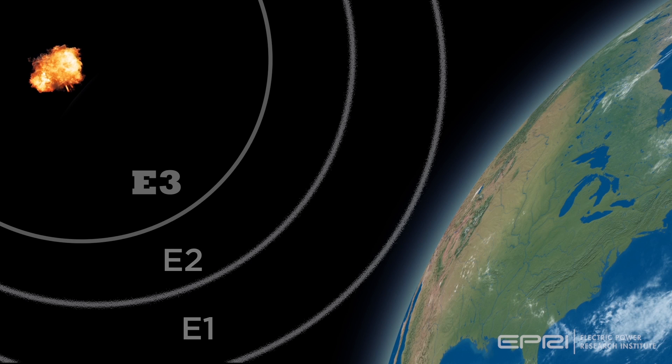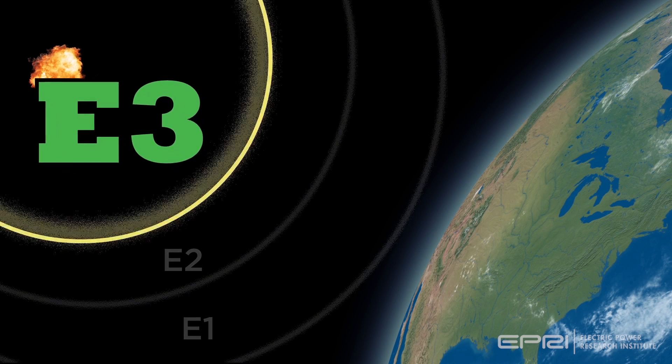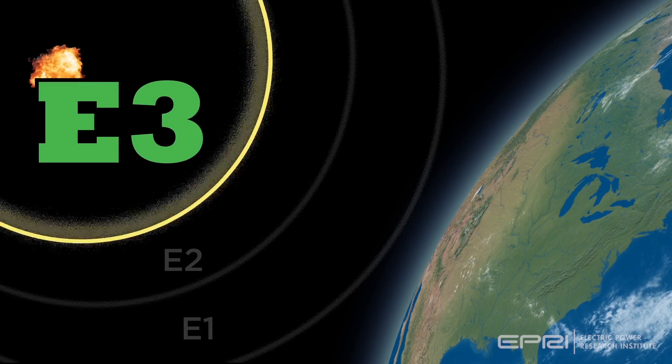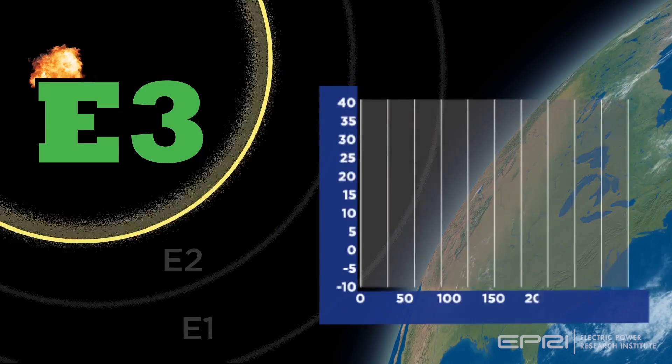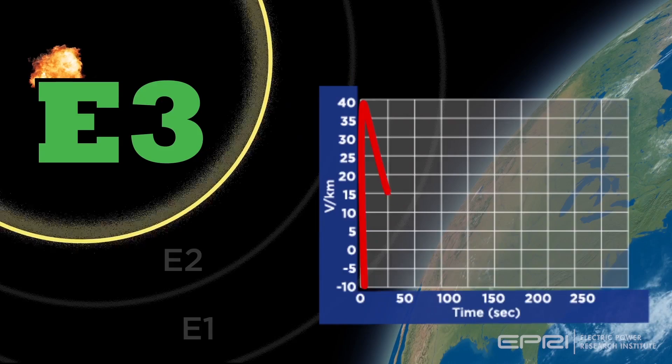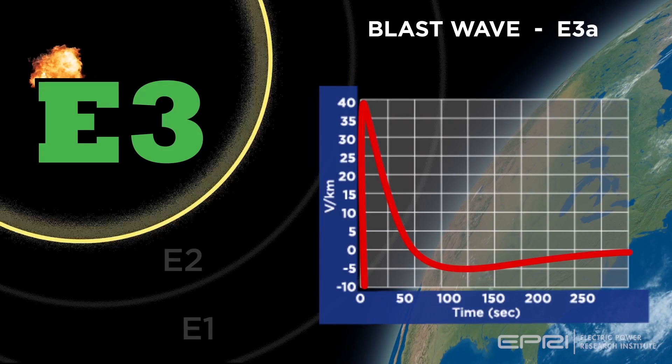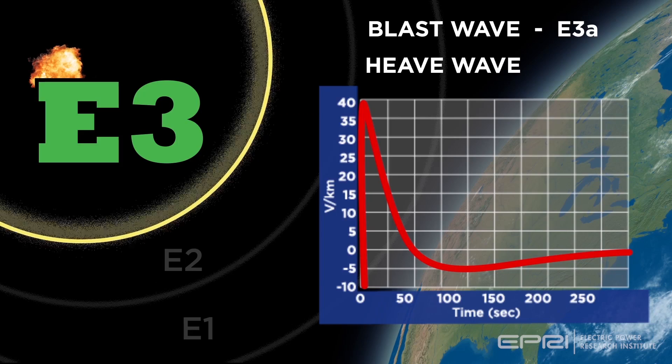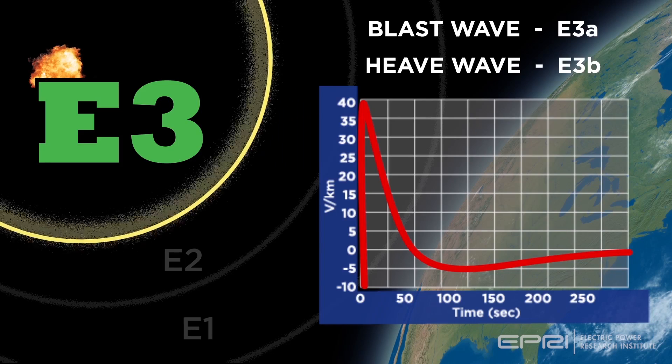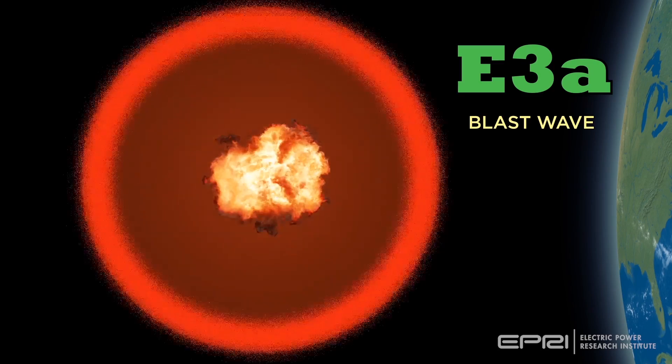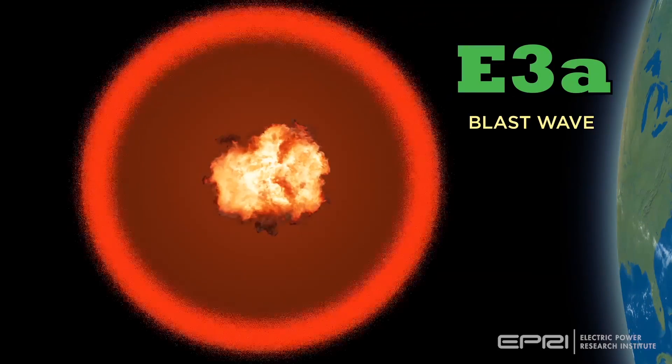The last portion of a high-altitude EMP event is referred to as an E3 waveform. There are two components to the E3 wave. One is referred to as the blast wave, or E3A, and the second is called the heave wave, for E3B. The blast wave is created within the first 10 seconds after the nuclear blast and as a result of the expanding fireball.